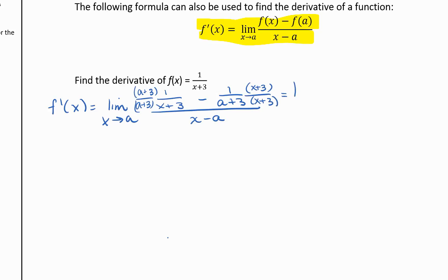So that's going to give us the limit as x goes to a. We'll have a plus 3, and then we're going to have a minus. So we'll distribute the minus. We'll have negative x minus 3, all over a plus 3 times x plus 3.